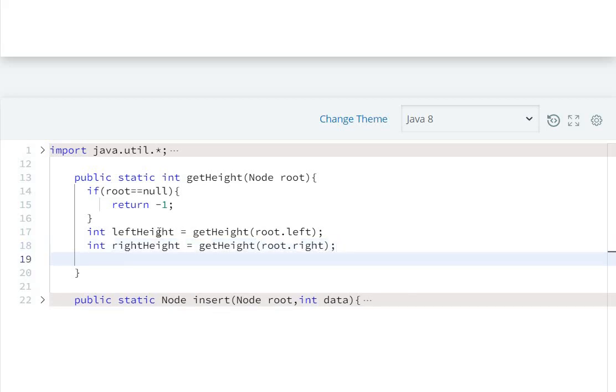Now from these two we will select the maximum and add plus one to it and return. Don't worry, I will explain it. We will write: return Math.max of leftHeight, rightHeight plus one.